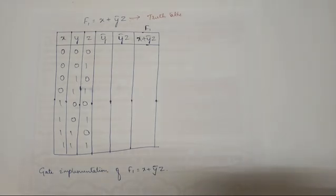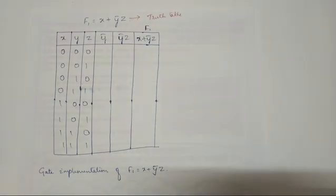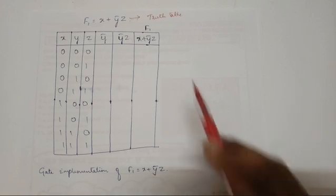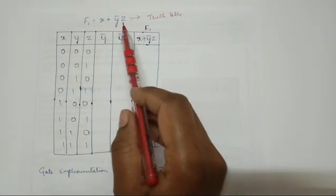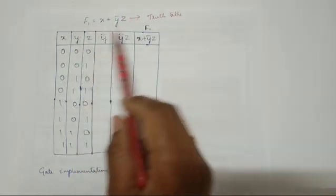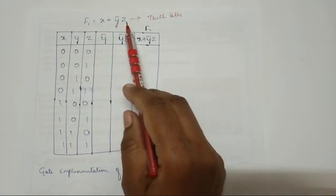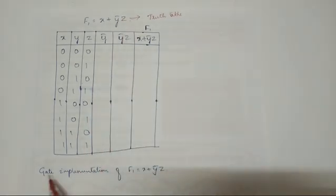Welcome to Vinuta's math channel. This is the 10th video of the DDCO Module 1: Introduction to Digital Design, according to the new 2022 scheme. In this video, we are going to learn how to write a truth table when a boolean function is given, and how to do the gate implementation for the same.